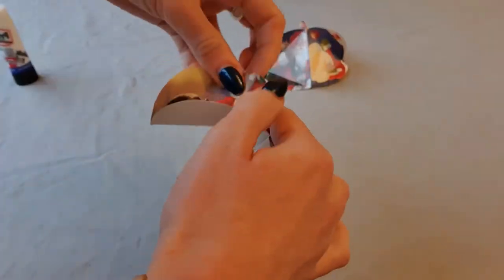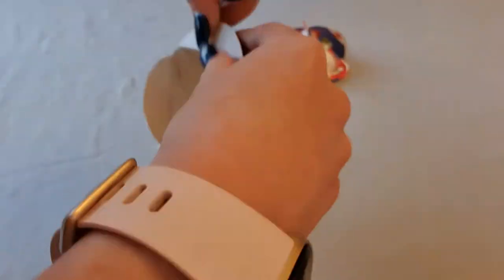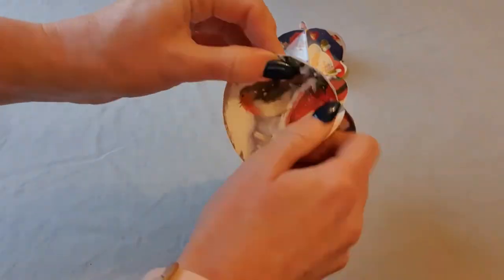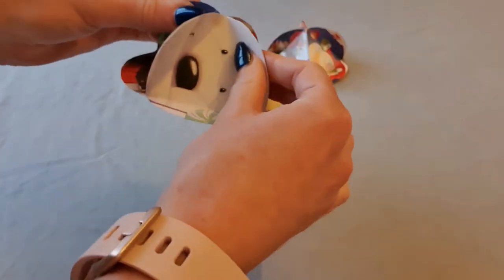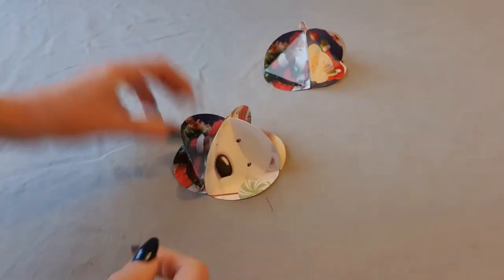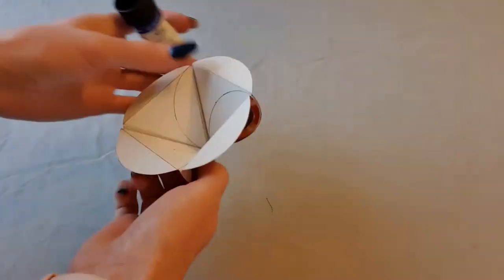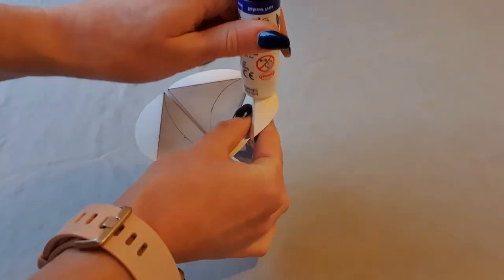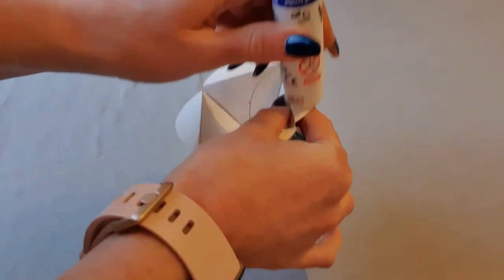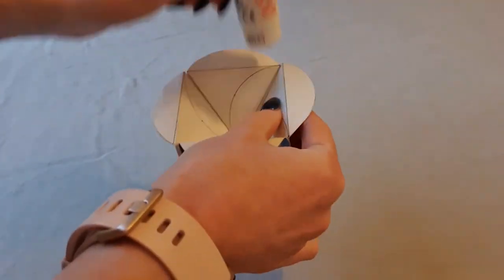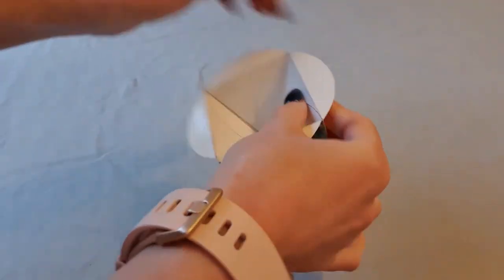Repeat this process with the four remaining pieces of card. Put glue on the four flaps remaining and carefully attach the two large pieces together, creating a sphere-like shape.